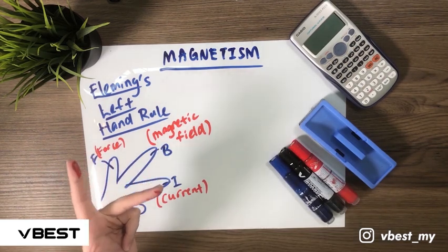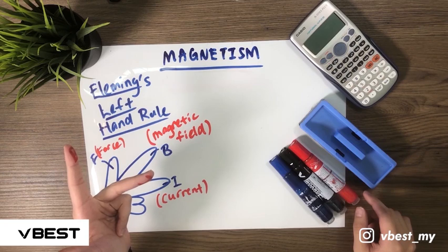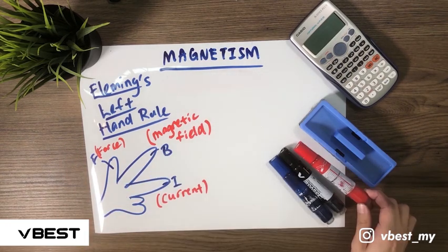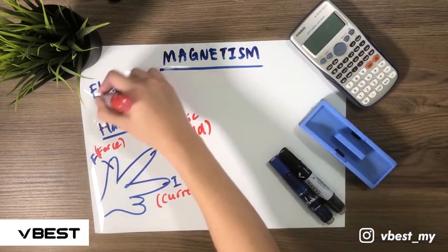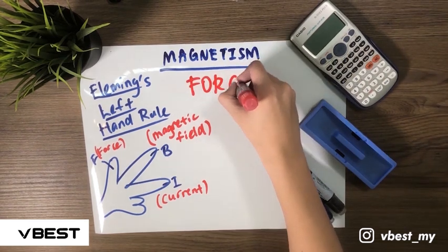This left hand is very useful when you are finding force produced by a magnetic field. Remember Fleming's left hand rule to find force.